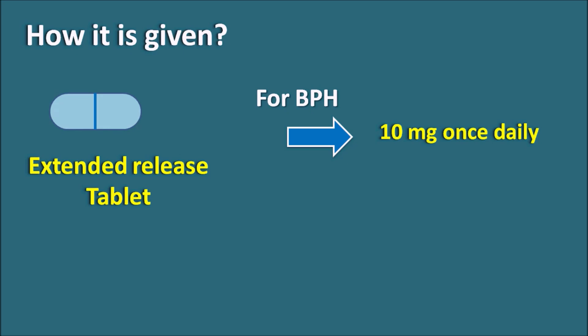At the same time, Alfuzosin produces vasodilation, which may result in postural hypotension, leading to dizziness and syncope in patients. This drug is available as an extended-release tablet given at a dose of 10 mg once daily. That's all for today — hope you have enjoyed this video.